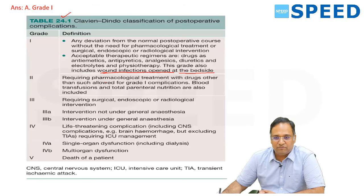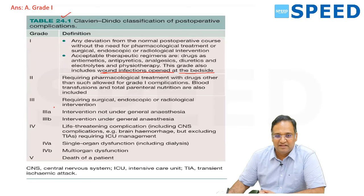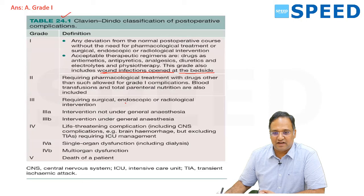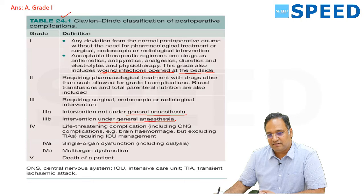Grade 2 requires pharmacological treatment with drugs other than those allowed for grade 1 complications; blood transfusions and total parenteral nutrition are also included. Grade 3 requires surgical, endoscopic, or radiological intervention. Grade 3a is intervention not under general anesthesia. Grade 3b is intervention under general anesthesia — this is also a potential MCQ and has appeared twice in the last 5 years.